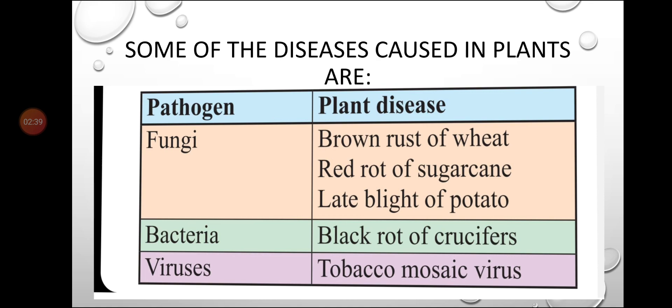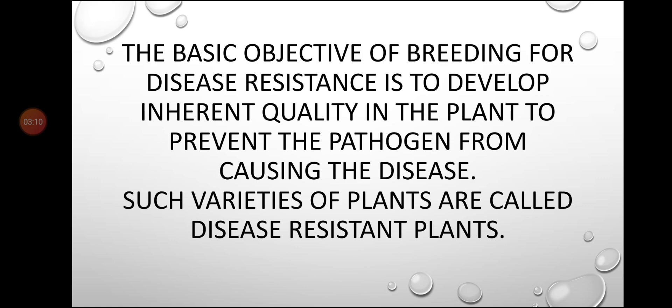Just like human beings have diseases such as cough, cold, fever, malaria, and pneumonia, plants also have diseases. These plant diseases are named brown rust of wheat, red rot of sugarcane, late blight of potato, and are caused by pathogens such as fungi, bacteria, and viruses.